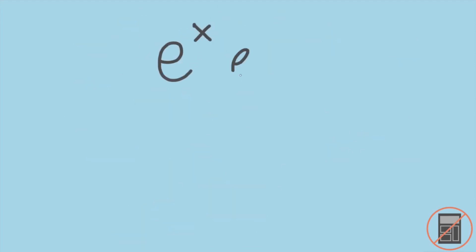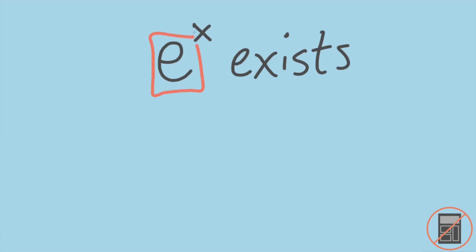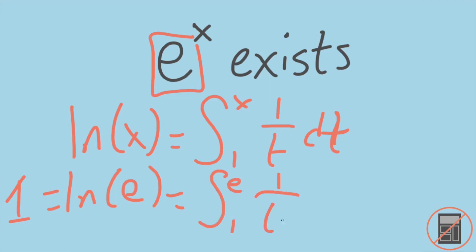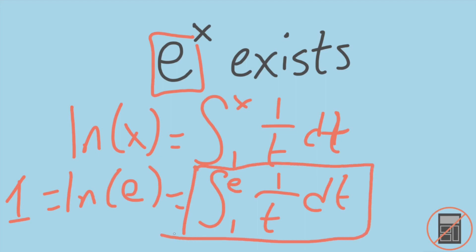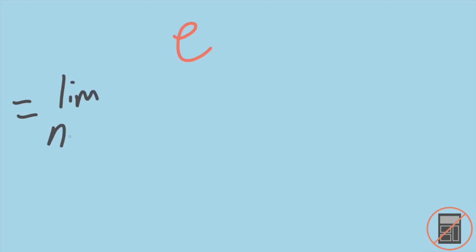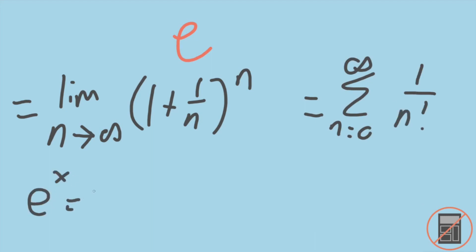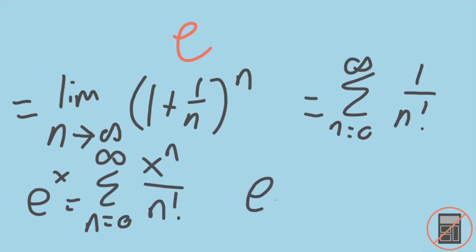Now that we've proven that e to the x exists, we can connect our number e to one of the many definitions of it. Looking at its inverse function, the natural log of x, which equals the integral from 1 to x of 1 over t dt, we find that the natural log of e equals 1, which equals the integral from 1 to e of 1 over t dt, thus proving one of the other definitions: that this integral equals 1. In the next video, we'll go over other definitions of e, in particular showing it equals the limit as n approaches infinity of 1 plus 1 over n to the n, and that it equals the sum from n equals 0 to infinity of 1 over n factorial. We'll prove that e to the x equals its Taylor series and compute an approximation showing it starts with 2.71.